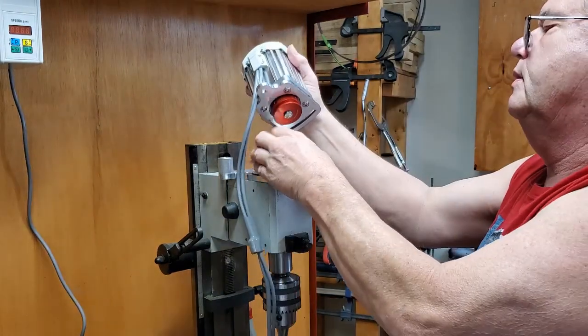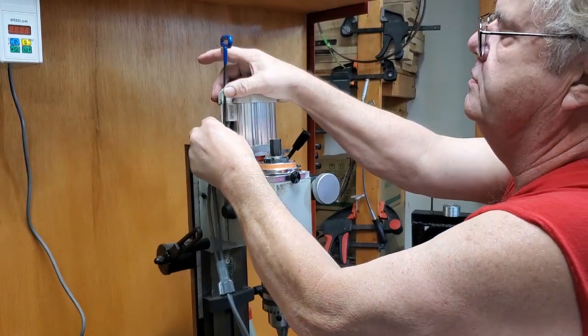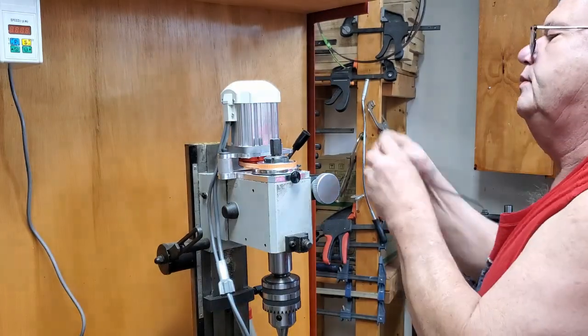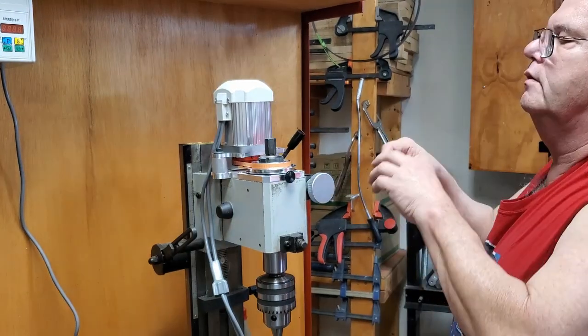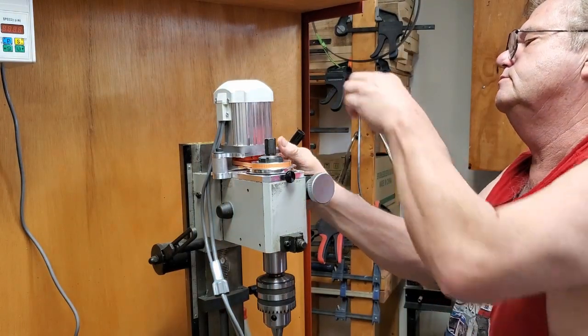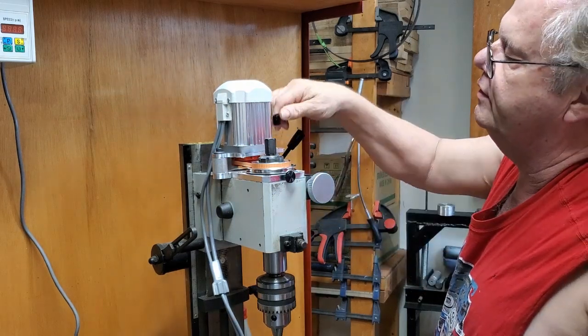Put the belt on. Put the pivot bolt in. Put the locking bolt in. Tighten the belt. Put this on, lock the motor in place.